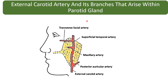The third structure is the external carotid artery, and some of its branches arise within the parotid gland. Although the external carotid artery has eight branches in total, only three — two terminal and one additional — arise within the parotid gland. It enters along the posteromedial surface and gives off the posterior auricular artery, which emerges along the posterior border of the parotid gland.